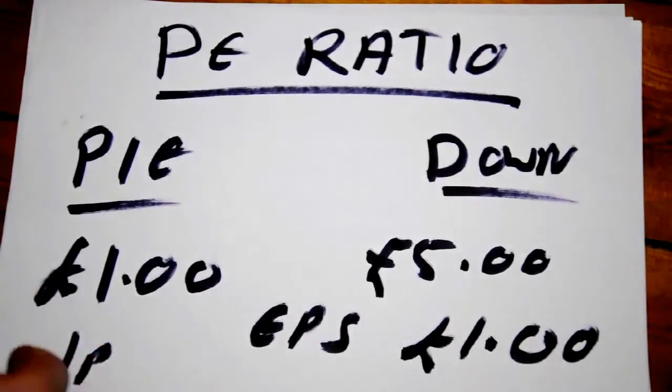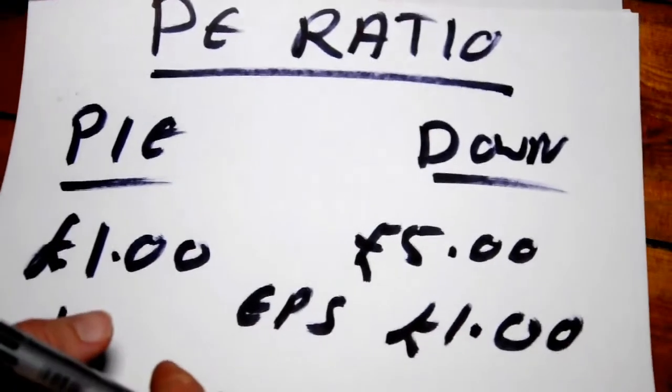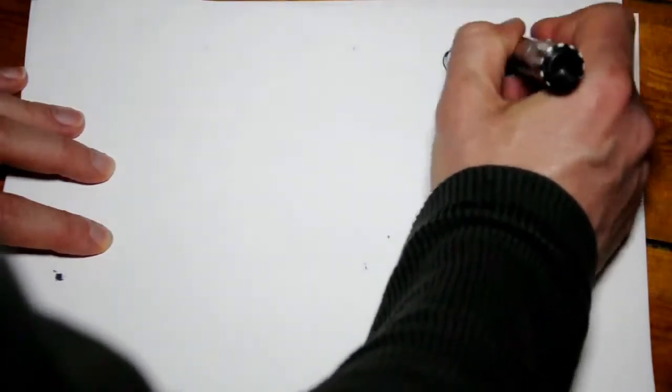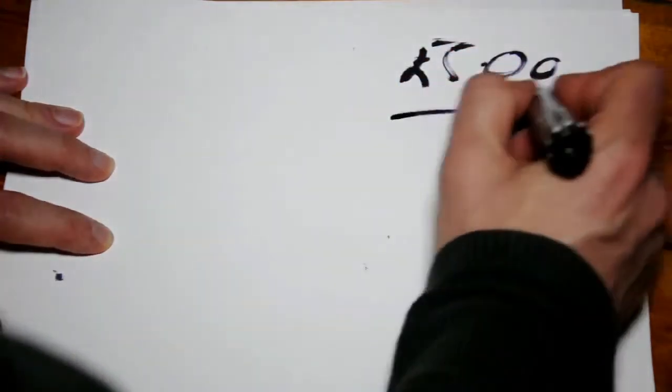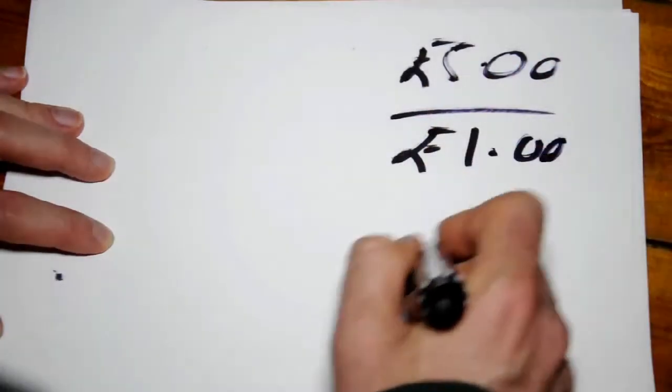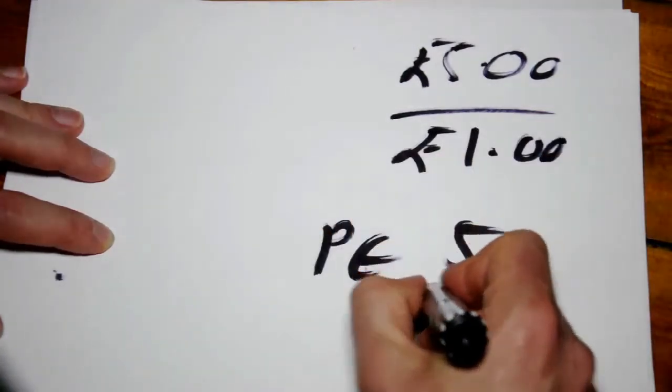Now, when we look at valuations, we can see that we're paying a lot more for Down to Earth than we are for Pie in the Sky. If we take the share price of Down to Earth, which is five pounds, and we divide it by the earnings per share, which we said was one pound, we get a value of five. So the P-E ratio for Down to Earth is five.